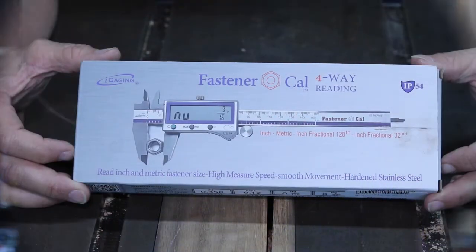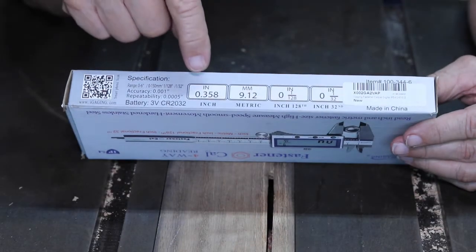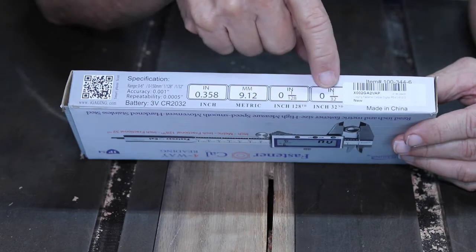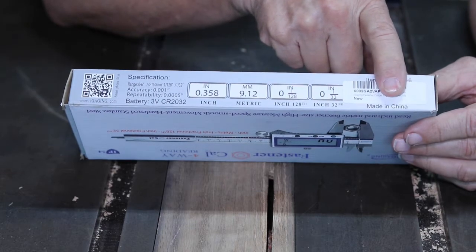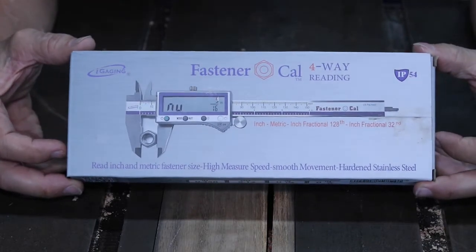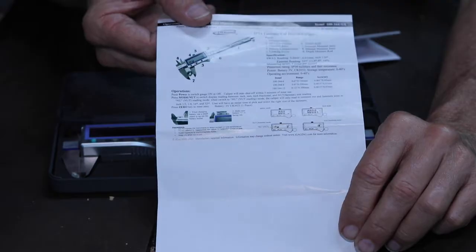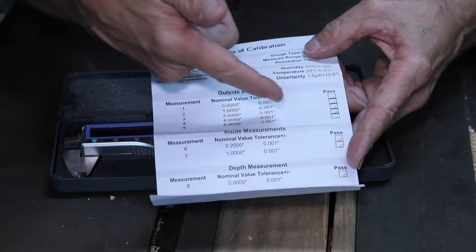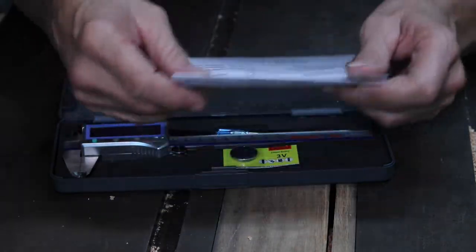This is the box that the iGaging calipers come in. They are fastener calipers, four-way reading. On this side you will see they read in inches and decimal, millimeters, inches and fractions to the 128th of an inch, inches in fractions to the 32nd of an inch. And the only downfall with these, I'm sorry, made in China. Other than that I am extremely impressed with these. This is a little carrying case that it comes in. This is everything that is included in these calipers. You have your instruction, you have a certificate of calibrations. Now I can't say that these have all been performed, every one of these little tasks, because the check marks are all the same, they look like they printed it on here. So take it for what you will.